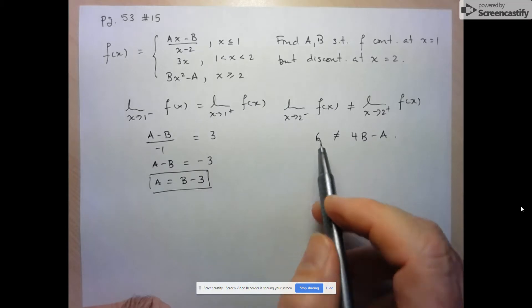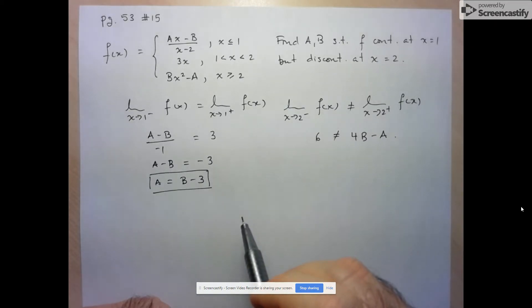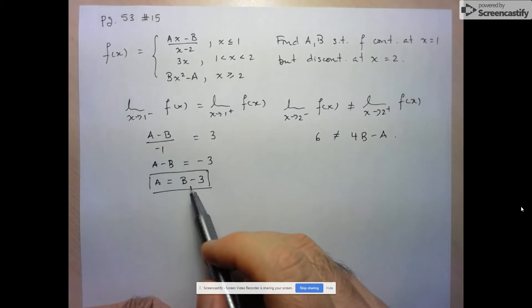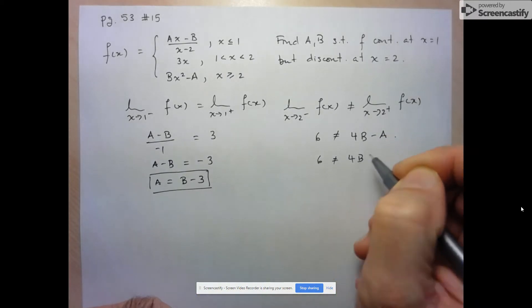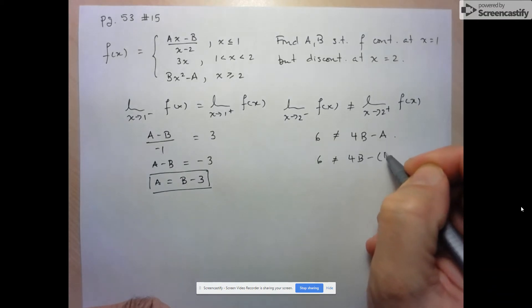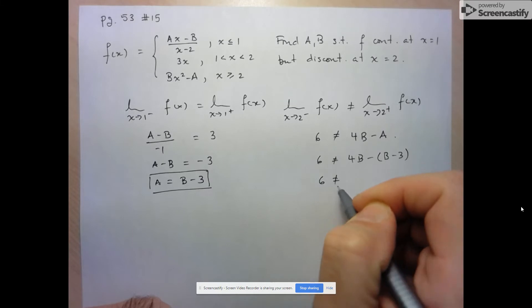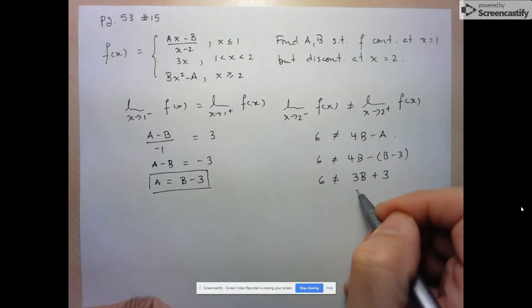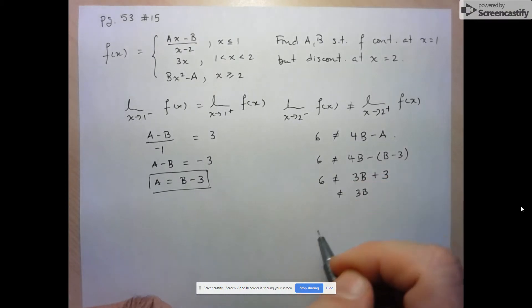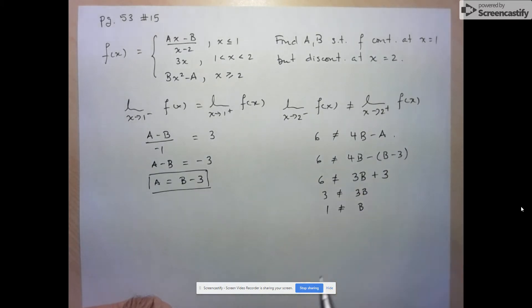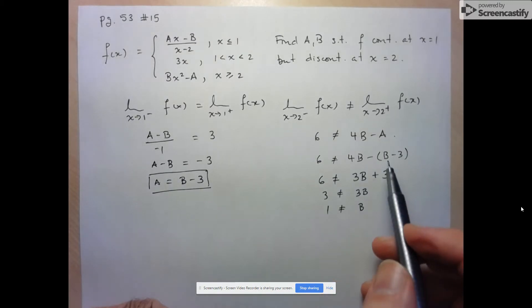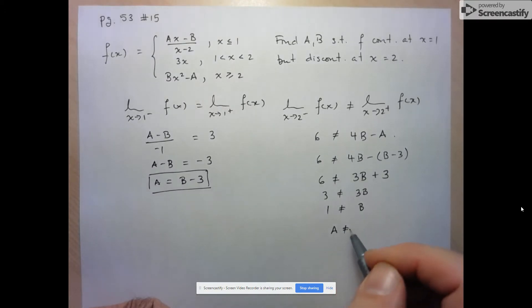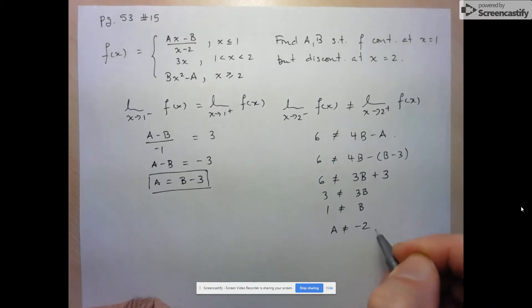So the condition is that 4B minus A cannot equal 6. Since we know A equals B minus 3, we substitute to get 4B minus (B minus 3), which is 3B plus 3. So 6 cannot equal 3B plus 3, meaning 3B cannot equal 3, and therefore B cannot equal 1. Consequently, A cannot equal 1 minus 3, which is negative 2.